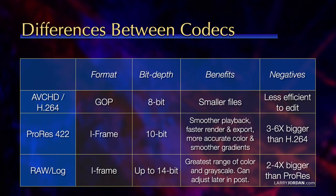There are other differences between codecs. For instance, AVCHD is a GOP format. It's only 8-bit, which creates smaller files, but it's less efficient to edit, as we've seen.